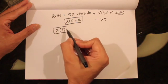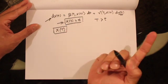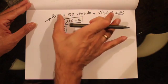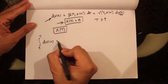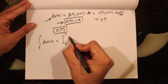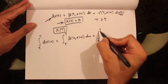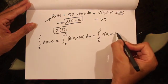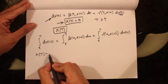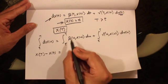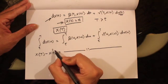We are looking for x(T) that satisfies this differential equation and the initial condition. The way to do that is to integrate the SDE from small t to capital T, giving the integral of dx(u) equals the integral from t to T of beta(u, x(u)) du plus the integral from t to T of gamma(u, x(u)) dW(u). The left-hand side then becomes x(T) minus x(t).